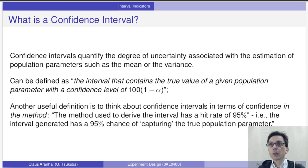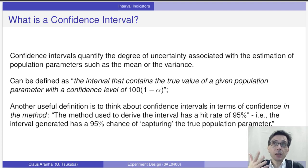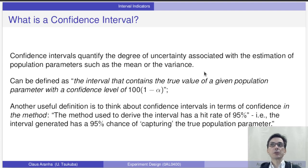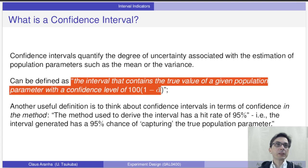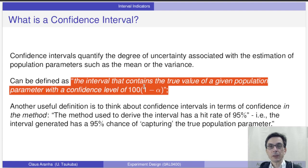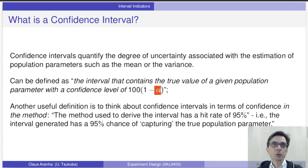Confidence intervals quantify the degree of uncertainty associated with estimation of a population parameter, such as the mean or the variance. The idea is that we define a parameter alpha, and the confidence interval will calculate two values: a minimum and a maximum. The interval between this minimum and maximum contains the true value of the parameter with a confidence of 100 minus alpha. So if alpha is 5%, our confidence would be 95% — or in probability terms, alpha is 0.05 and the confidence is 0.95.